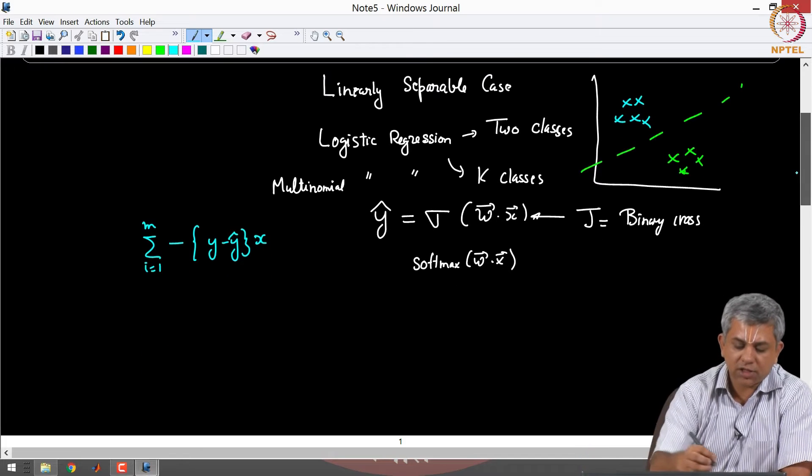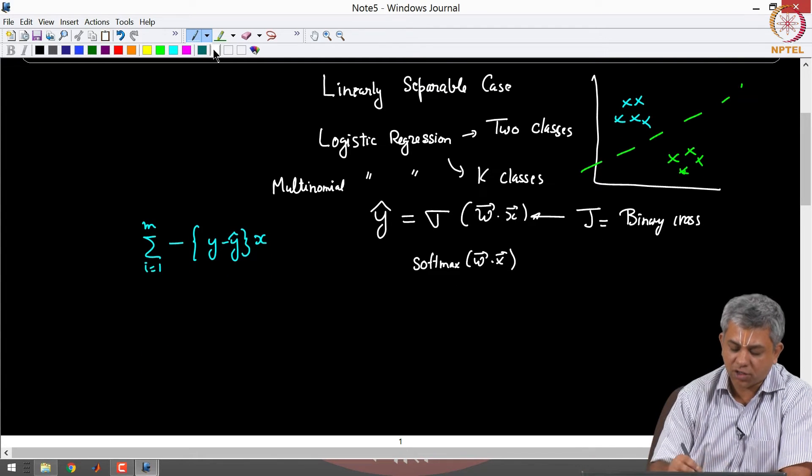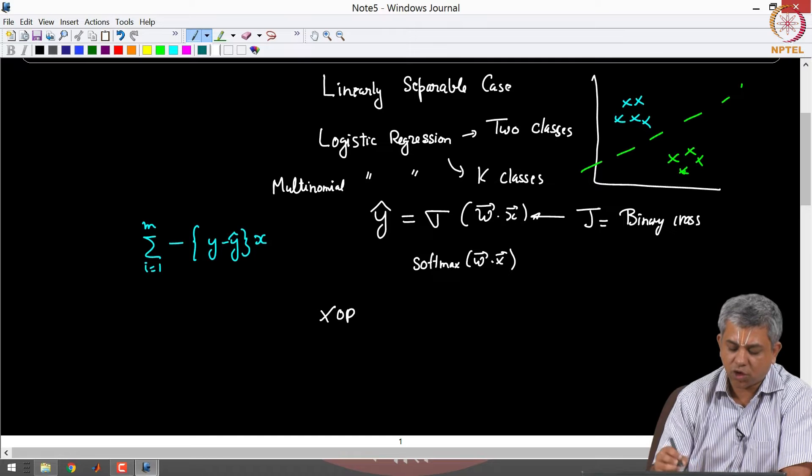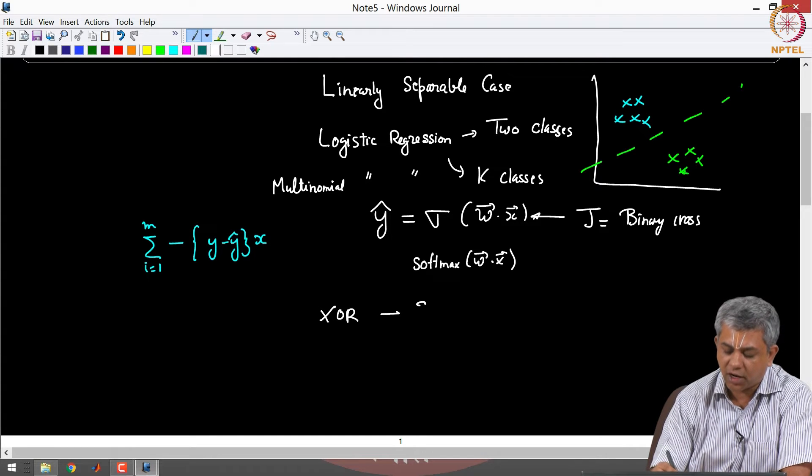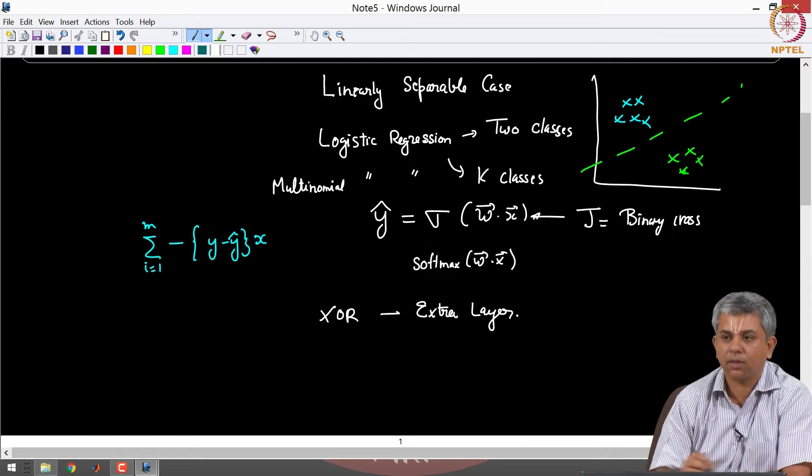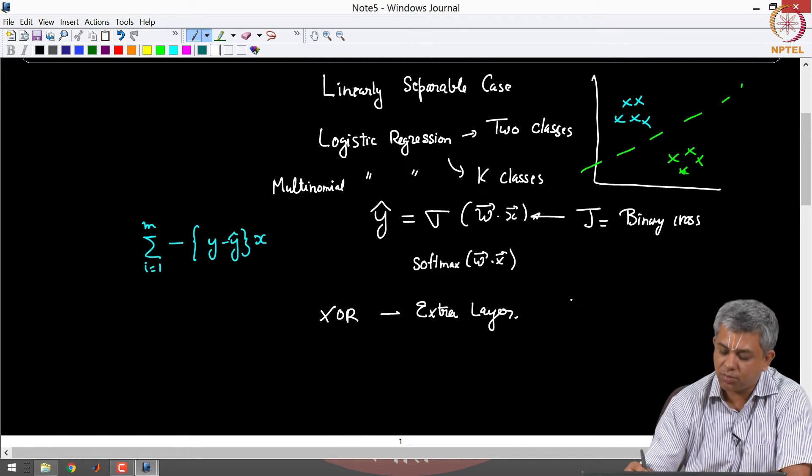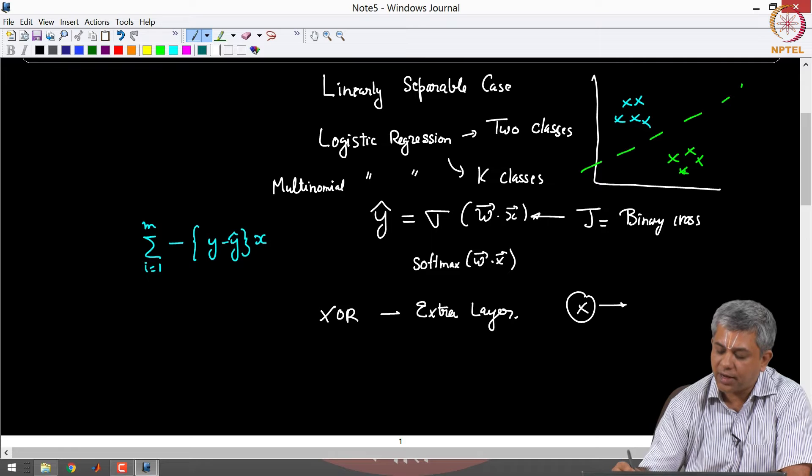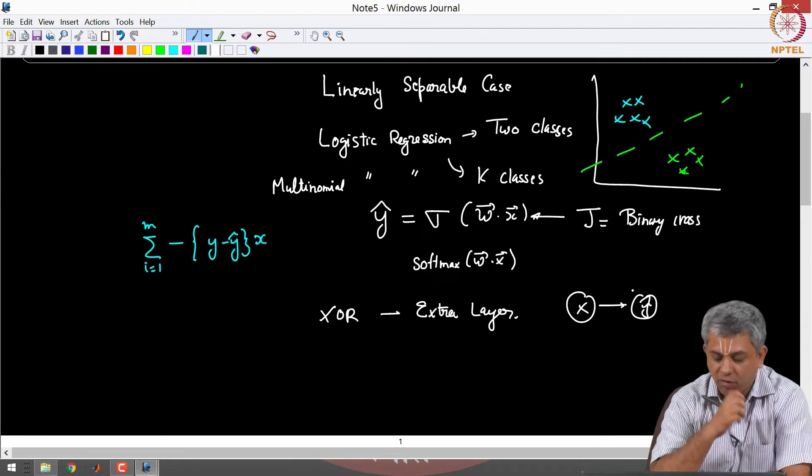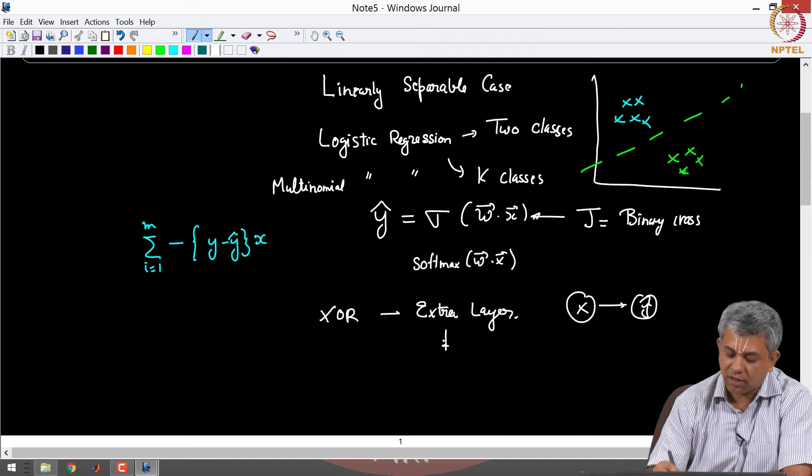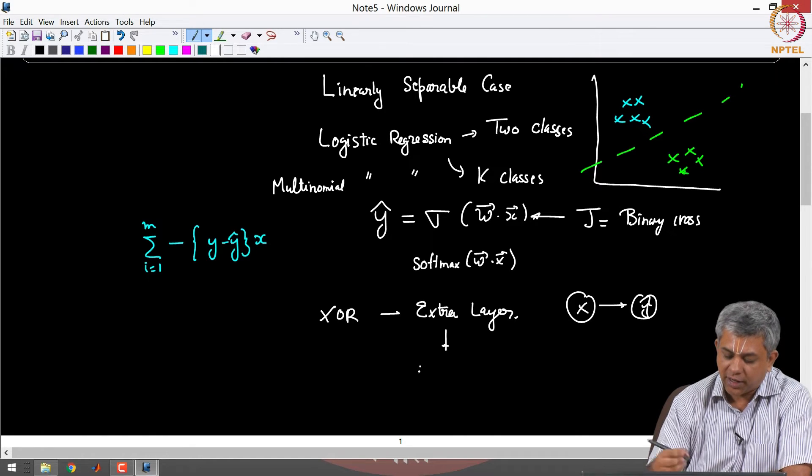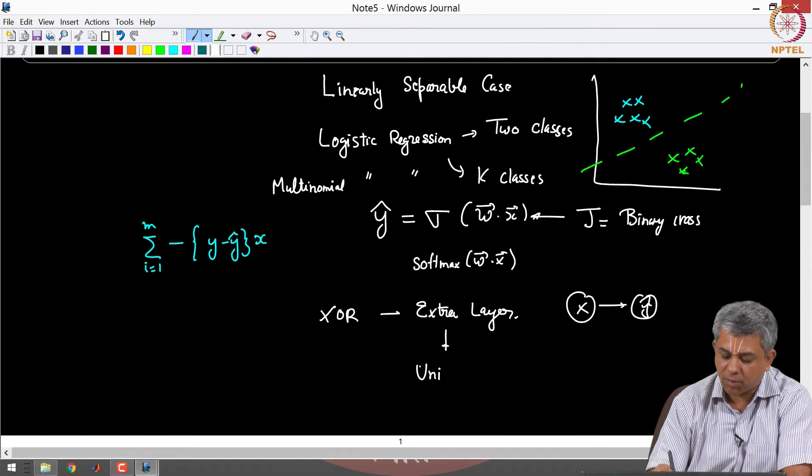When we tried this for XOR we saw that it needed an extra layer in the middle. It is not possible to simply take an input and map it directly to an output without a hidden layer.